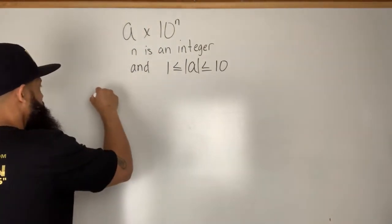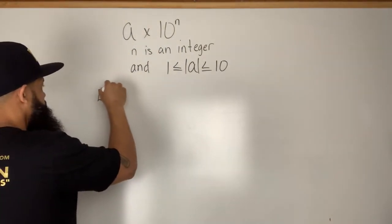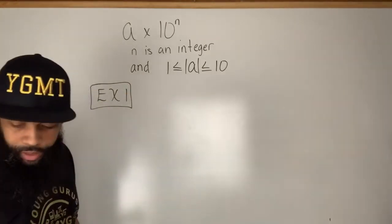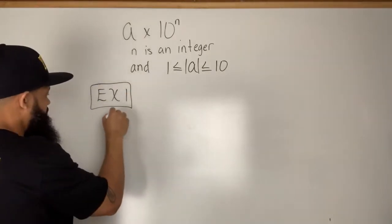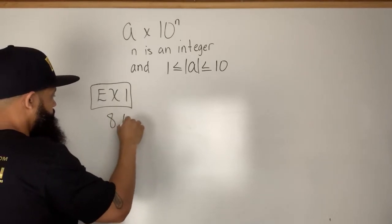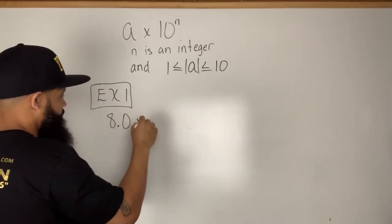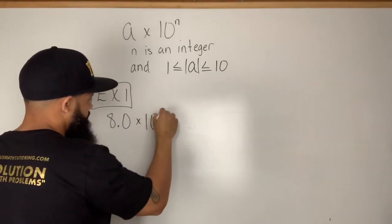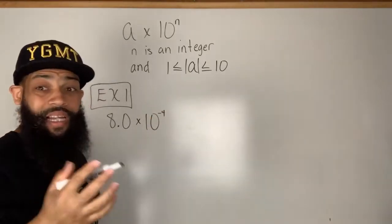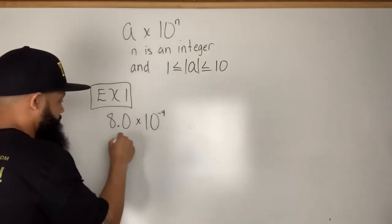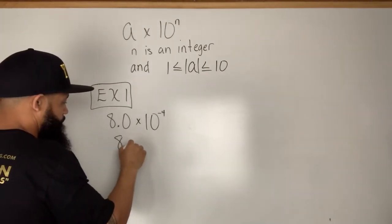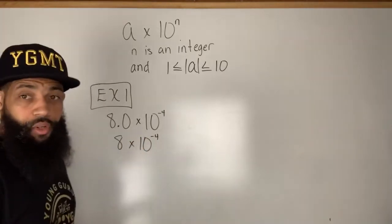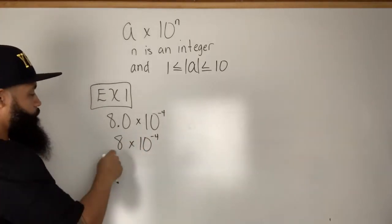Example one: let's say I have a number written in scientific notation — 8.0 times 10 to the negative fourth power. A lot of times they won't even write the decimal, so you'll see it written as 8 times 10 to the negative 4th power. Either way, it's the same number.